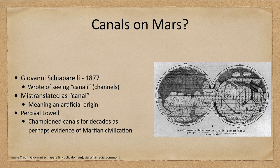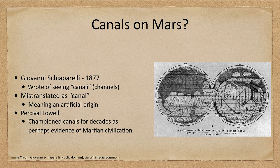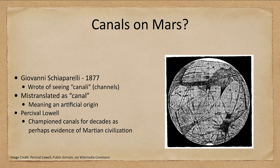A channel is a natural occurrence — a river channel would be something completely natural. A canal means an artificial origin; we think of things like the Panama Canal or the Suez Canal that are man-made. This gave the idea that maybe there was some kind of life on Mars. This was championed by Percival Lowell, who promoted the idea that a dying Martian civilization was bringing water from the north and south polar ice caps down to the warmer equatorial regions.